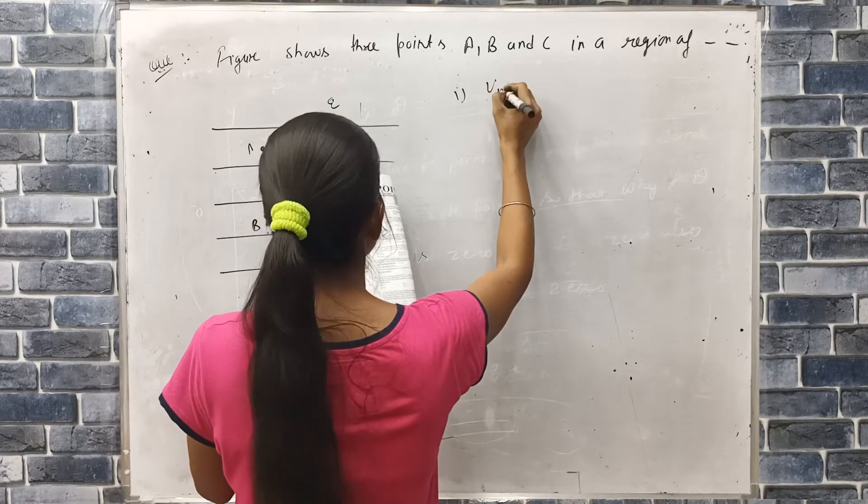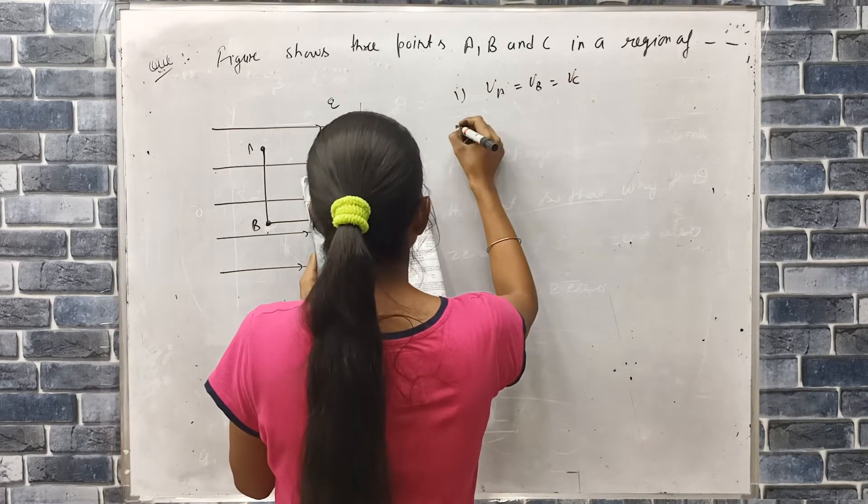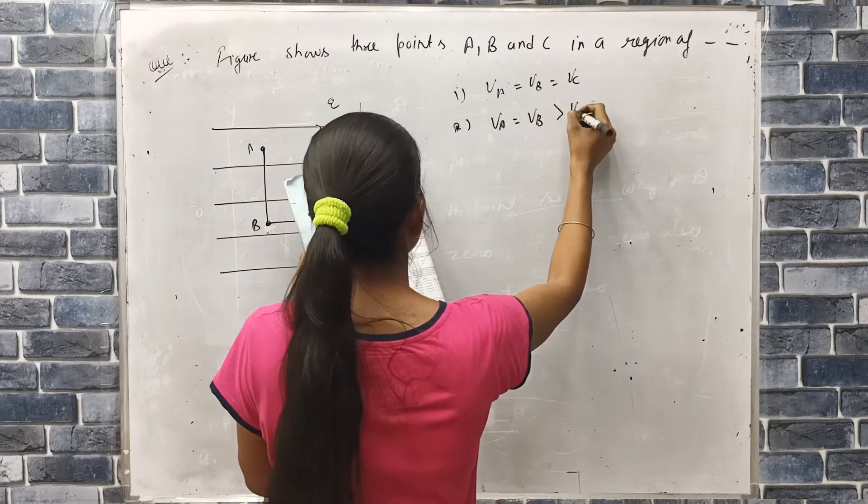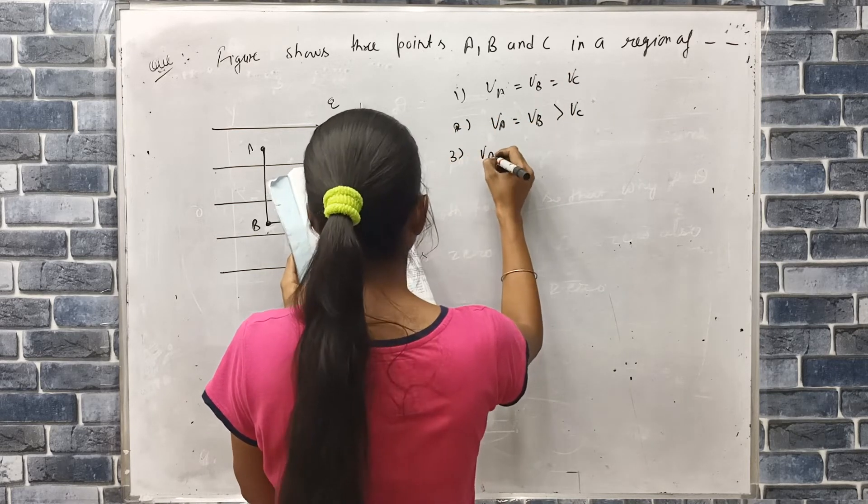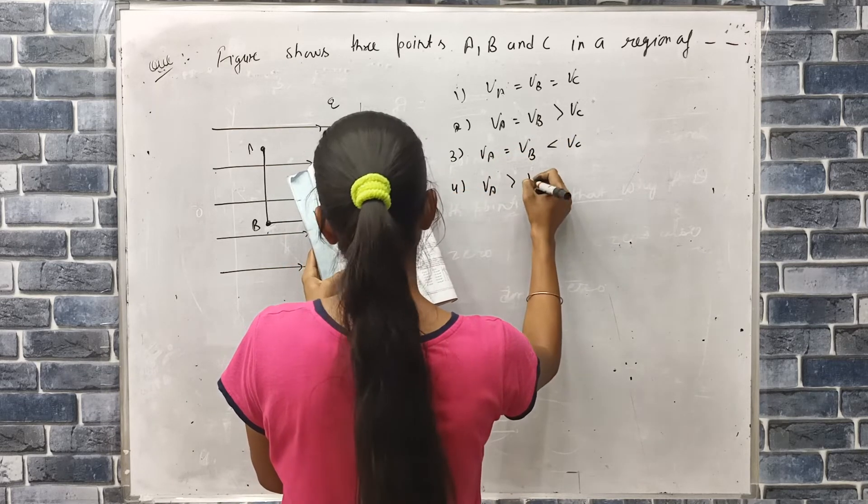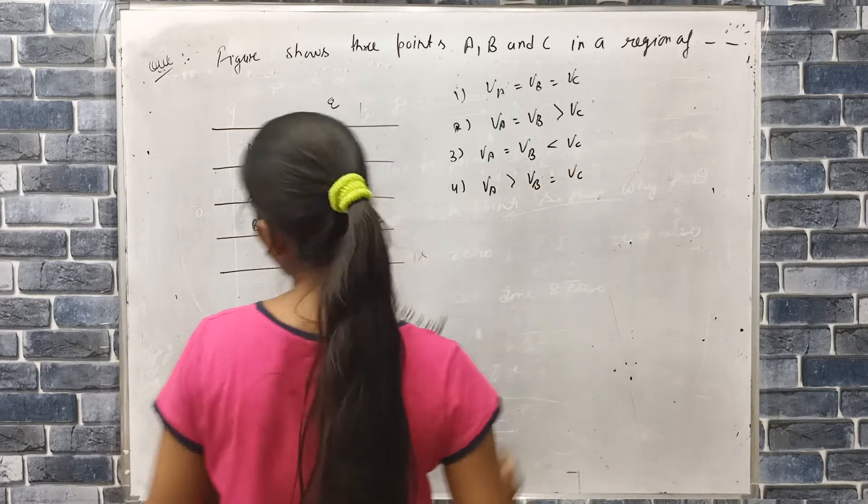Option 1: VA equal to VB equal to VC. Option 2: VA equal to VB greater than VC. Option 3: VA equal to VB smaller than VC. Option 4: VA greater than VB equal to VC.